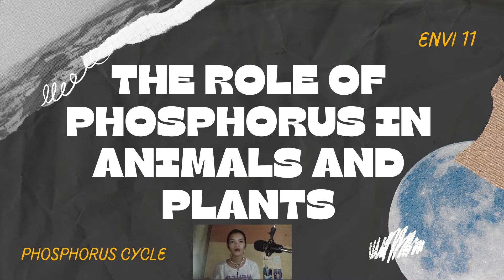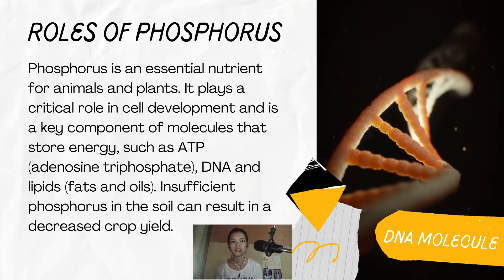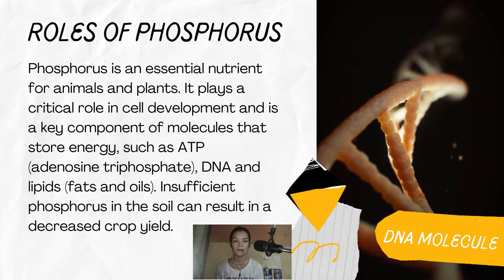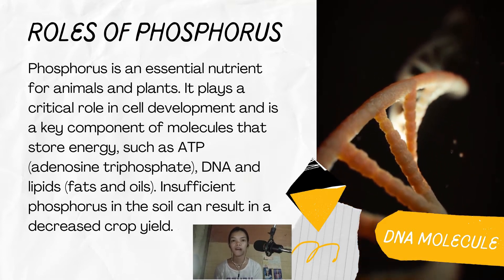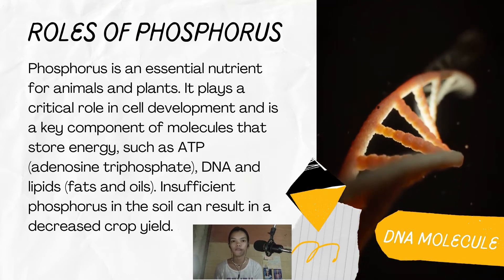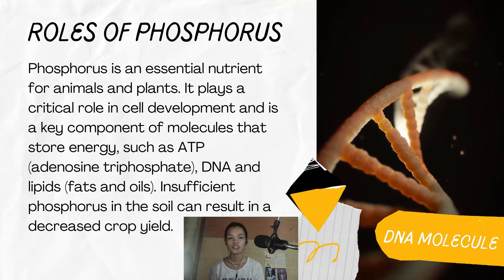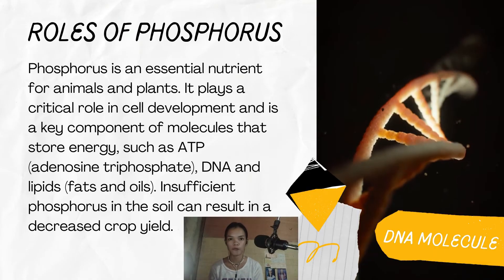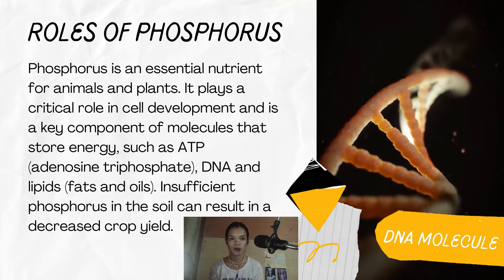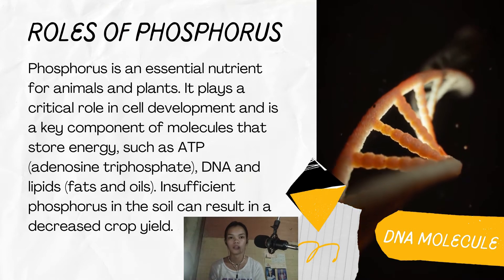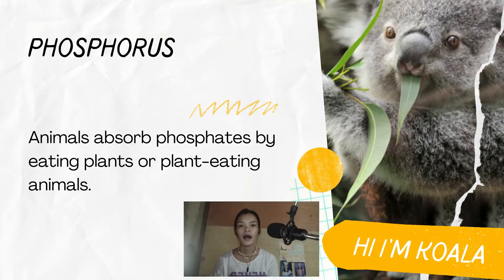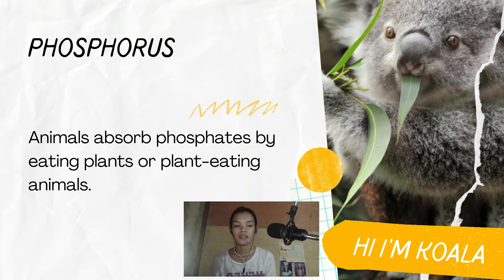The role of phosphorus in animals and plants: phosphorus is an essential nutrient for animals and plants. It plays a critical role in cell development and is a key component of molecules that store energy, such as ATP or adenosine triphosphate, DNA, and lipids or fats and oils. Insufficient phosphorus in the soil can result in decreased crop yield. Animals absorb phosphates by eating plants or plant-eating animals.